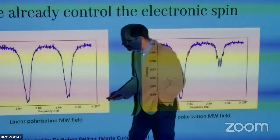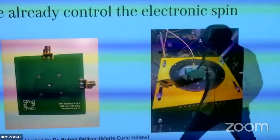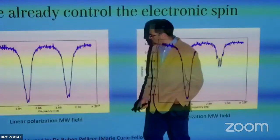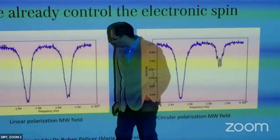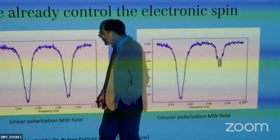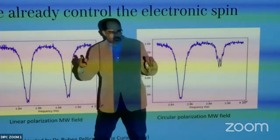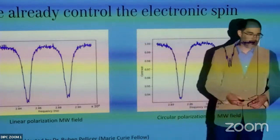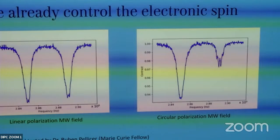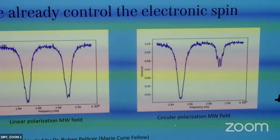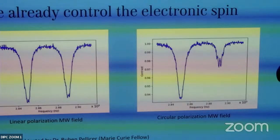When we sweep the microwave frequency, two resonance dips appear. The distance between them gives the magnetic field sampled by the system. We can also control the polarization of the microwave field — when we use circular polarization, one of the two resonances is greatly attenuated, giving us more control over which spin transition we drive.